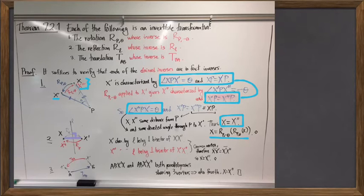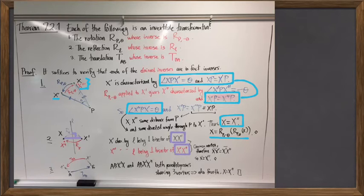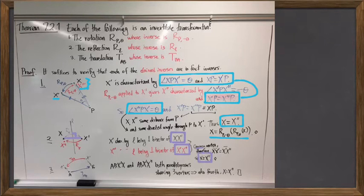We can define a reflection about a line L using the perpendicular bisector property — reflecting about line L means that L is the perpendicular bisector between a point and its image. Then, reflecting twice using the very same line of reflection means that same mirror is the perpendicular bisector both of XX′ and X′X double prime. It's not possible for one line to be the perpendicular bisector of two segments unless those segments are related by a translation. But because these two segments share a common vertex, they must be exactly the same segment, meaning X and X double prime are the same point. So to undo a reflection, just do the same reflection again.